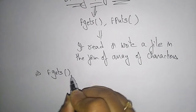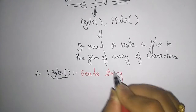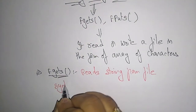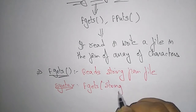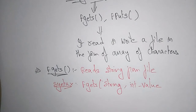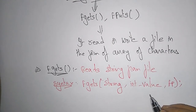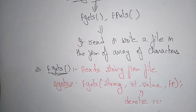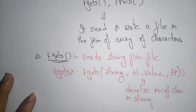The first one is fgets — it reads a string from a file, that is, a group of characters from the file. The syntax for fgets is: fgets(string, int_value, file_pointer). Here, string is what you want to read from the file, int_value denotes the number of characters in the string to be read, and file_pointer specifies from where you have to read the file.